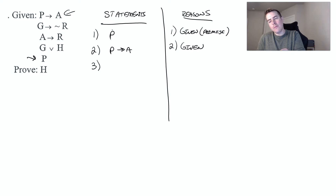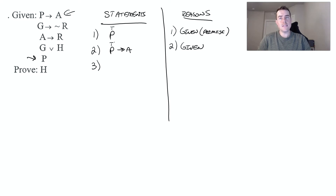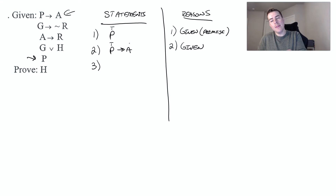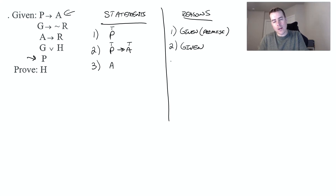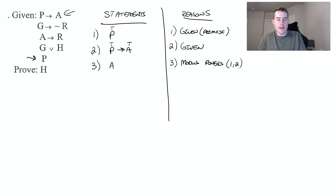So what can we conclude from this? Well, if P is true, and we have P implies A, the only way a conditional statement can be true is if both parts are true, or if the hypothesis is false. Since P is true here, that means A must be true as well. When we have P is true, P implies A, and we get A — we call this modus ponens. That was from lines one and two.